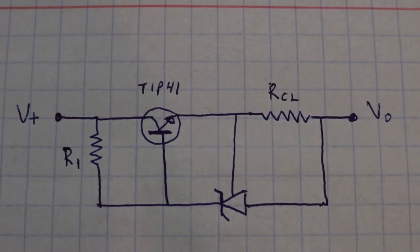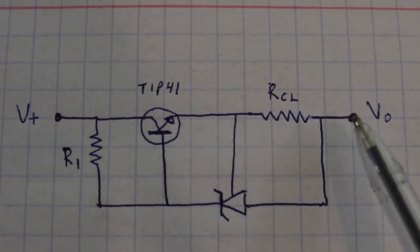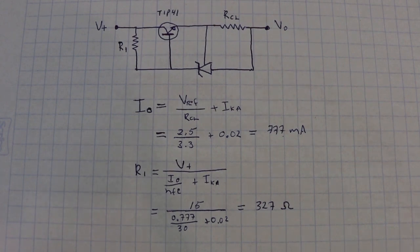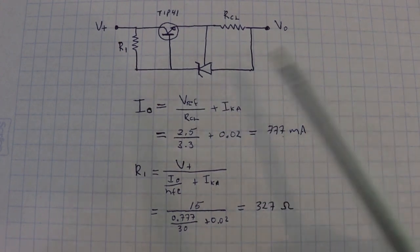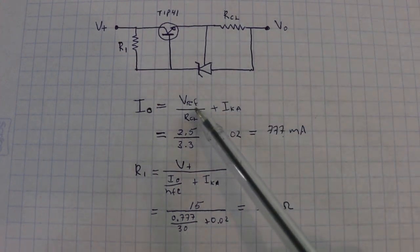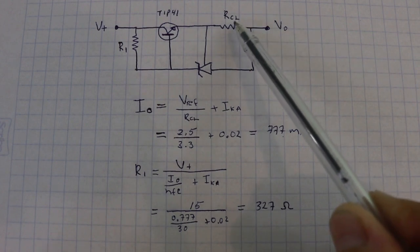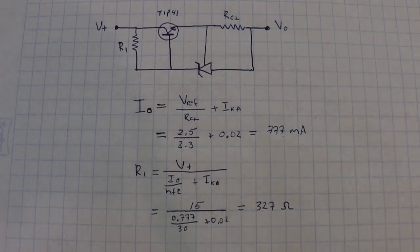So, we have feedback on both sides, and this makes the current at the output to be stable. The output current is given by this formula: VREF, which is 2.5 for this device, divided by this resistance, plus the current through the device, which is around 20 milliamps.